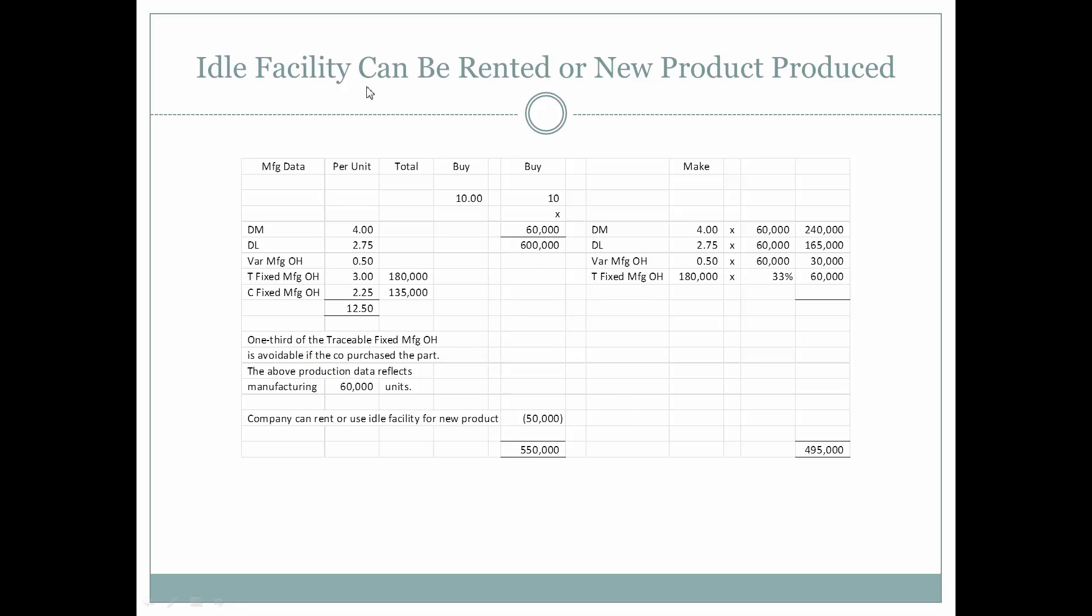The idle facility that would come about as a result of no longer making the part can be rented or a new product produced. Now we have a use for the idle portion of our facility that would be freed up if we wind up buying the part from an outside vendor.